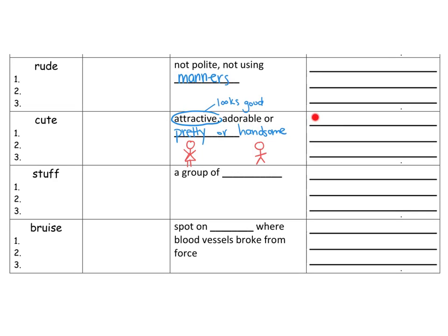We're going to write a sentence with the word cute, such as: 'The fluffy bunny was so cute, I wanted to pet it.' Then draw your picture. Stuff is a group of things — if we just say stuff, we're talking about all those things. My mom always makes me pick up my stuff when it is all over my room. Draw your picture of your room.